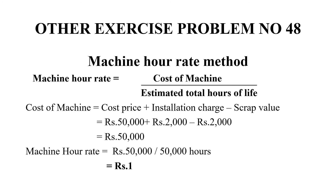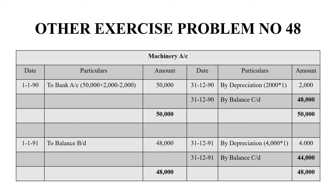We will open the machinery account for 4 years. In the first year, 1990, we purchased machinery — bank account Rs. 50,000 plus installation charges. The depreciation for 1990 is 2,000 hours × Re. 1 = Rs. 2,000. The balancing figure is Rs. 48,000, which is carried down to the next year.